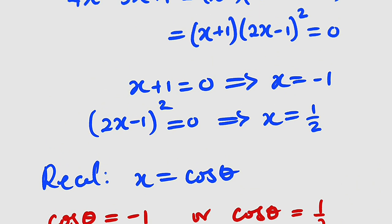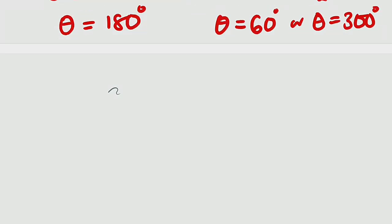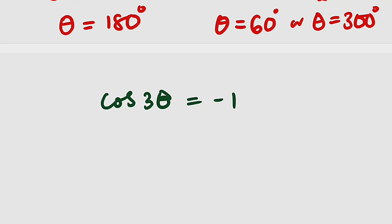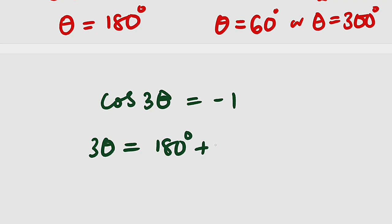Now let me show you the simplest way to solve this problem. Given cosine of 3 theta equals negative 1, ask: cosine of what angle is negative 1? Cosine of 180 degrees. So 3 theta equals 180 degrees, plus multiples of 360 degrees. Let me show you why.